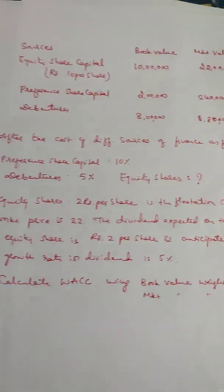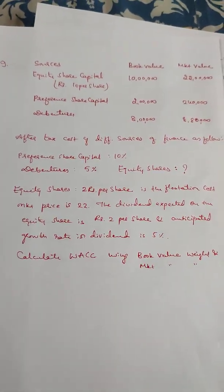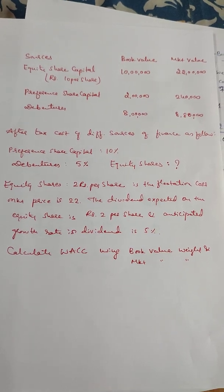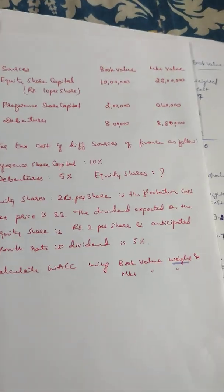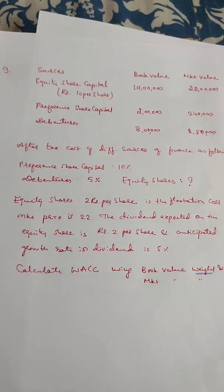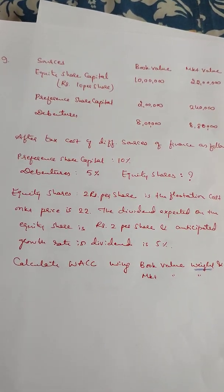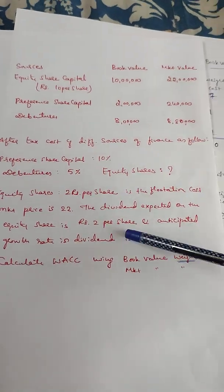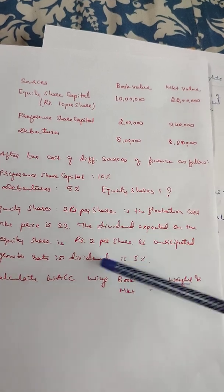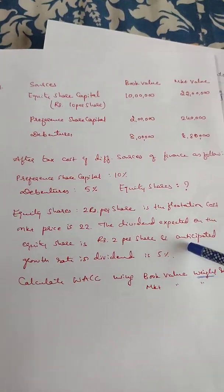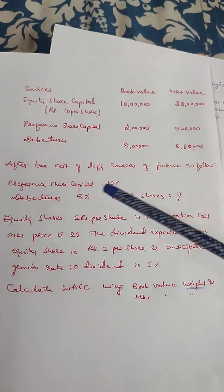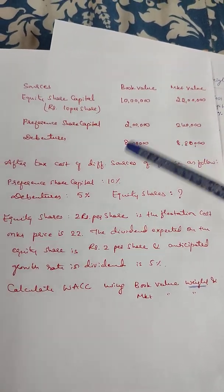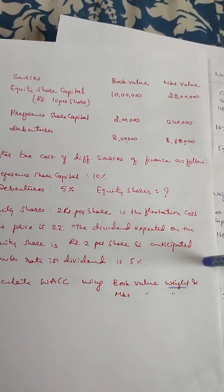But the difference is that you can use the same cost of capital for debentures etc. Equity shares — so I find out using the book value weights method and the market value weights method. In the book value method, equity shares: 2 rupees per share is the face value, market price is 22, the dividend expected on the equity share is rupees 2 per share, and anticipated growth rate in dividend is 5%. Then we calculate the cost of equity using the market value. The book value and market value proportions are then used to find the weighted average cost of capital.